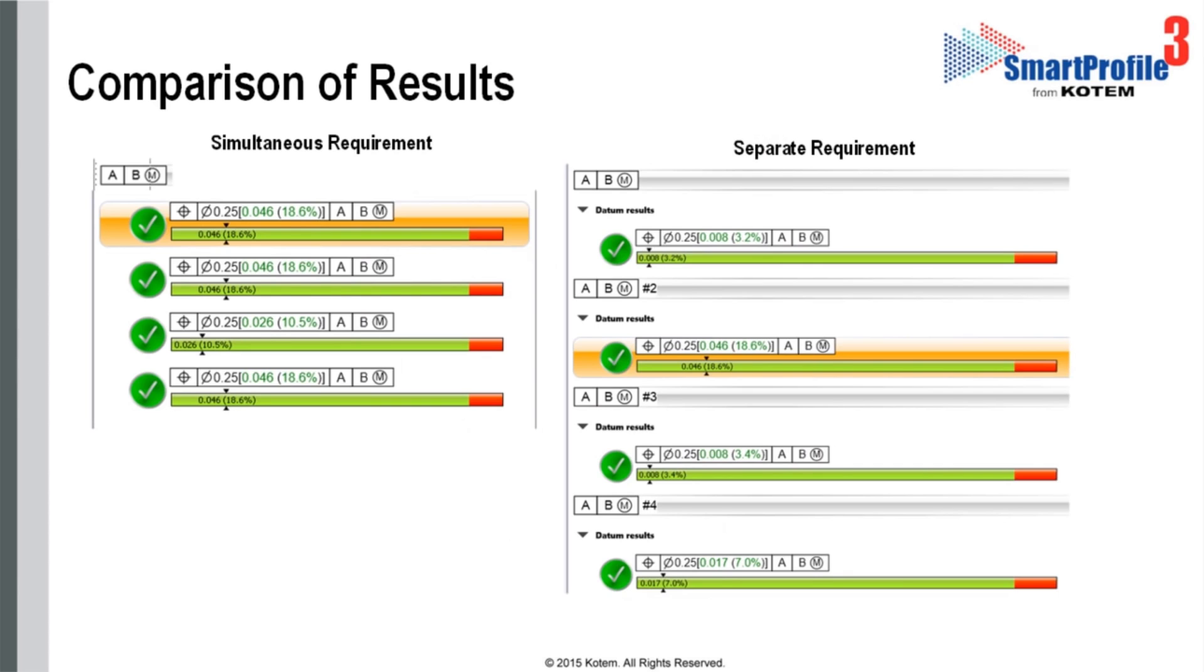Enforcing simultaneity maintains the mutual relationship of all points to the tolerance zones, which may be crucial for the part to fit in the assembly. Which specification is best depends on the functional requirements of the part.